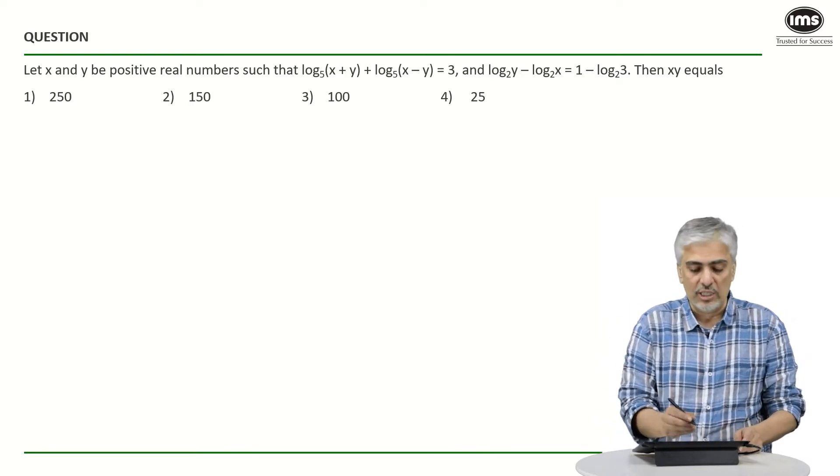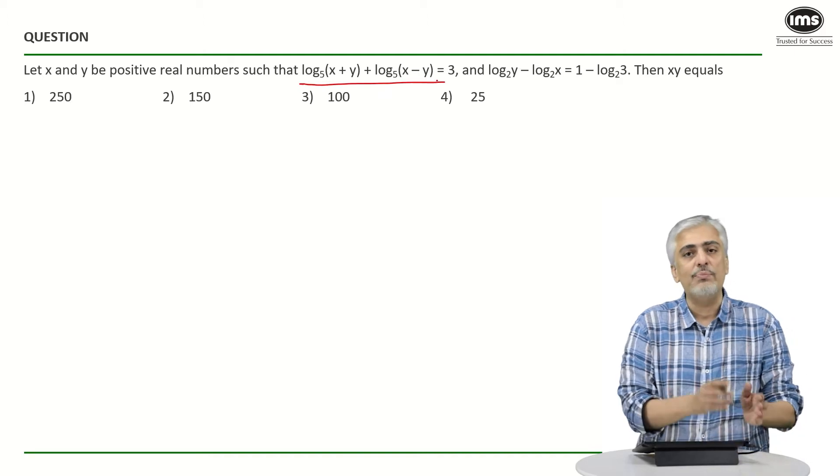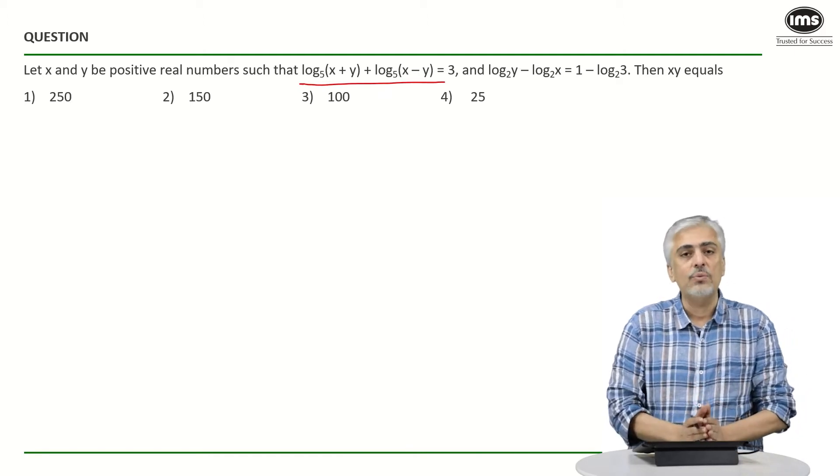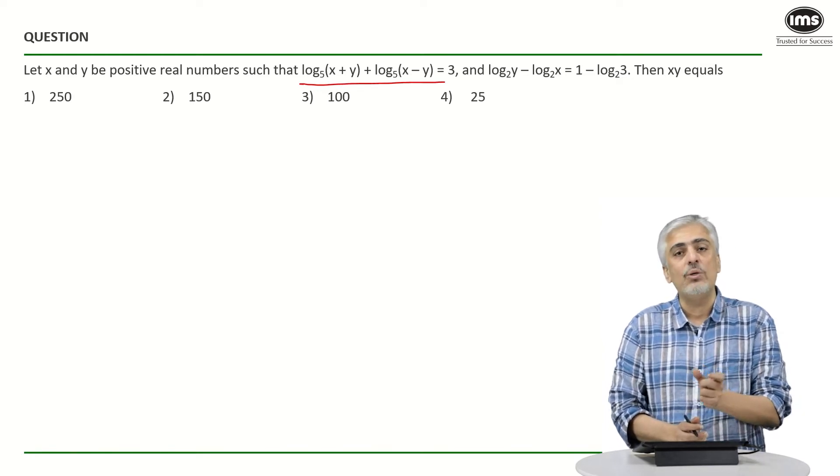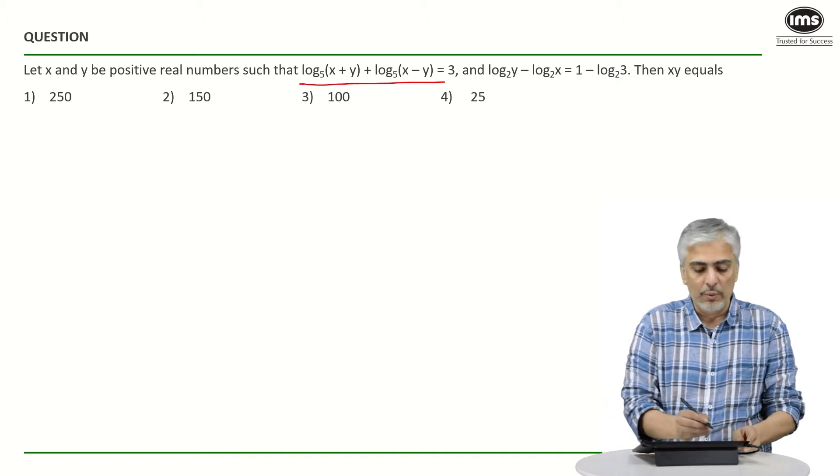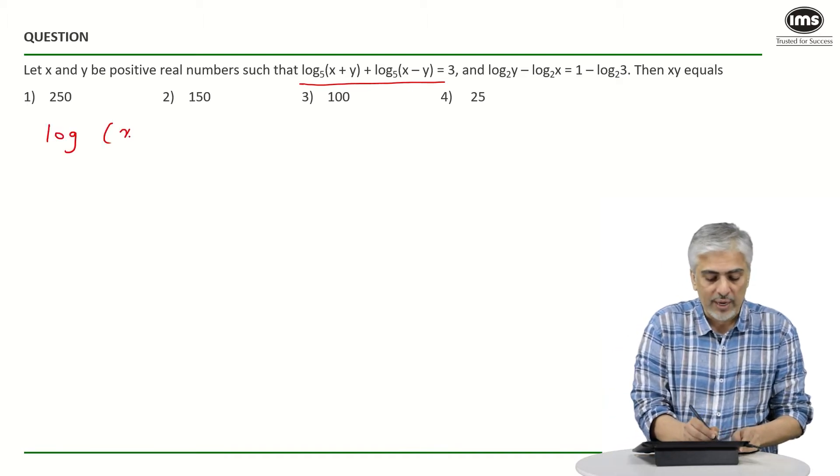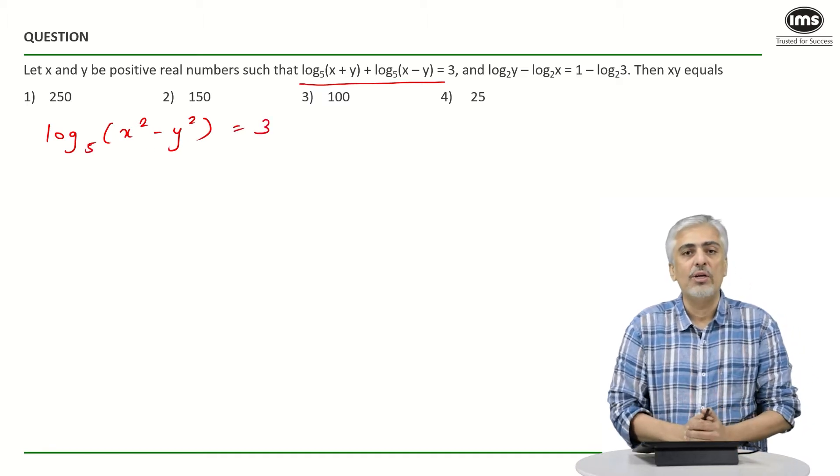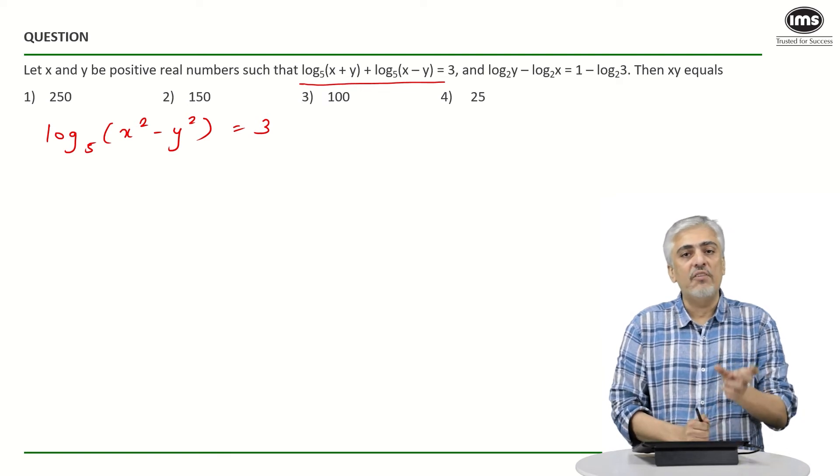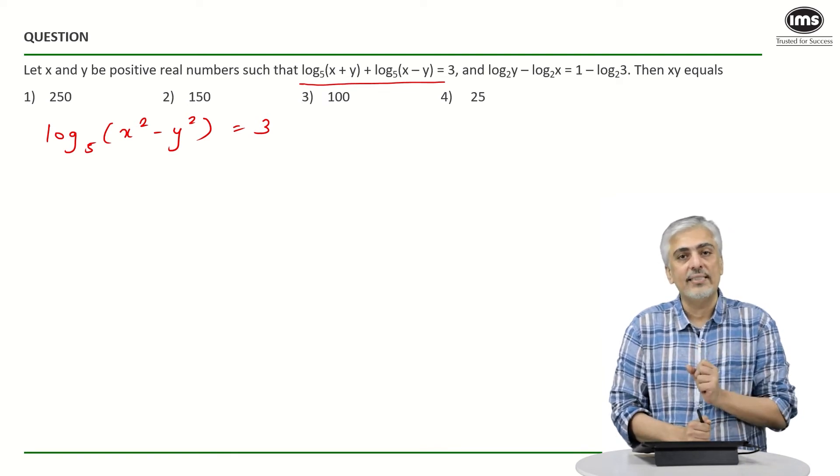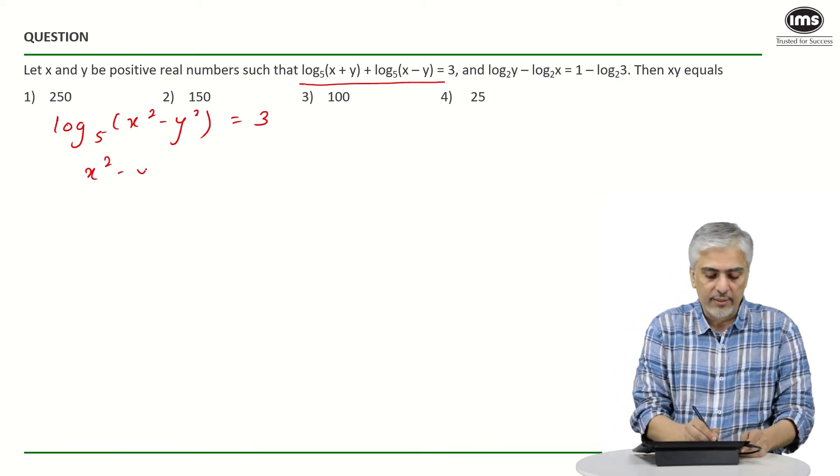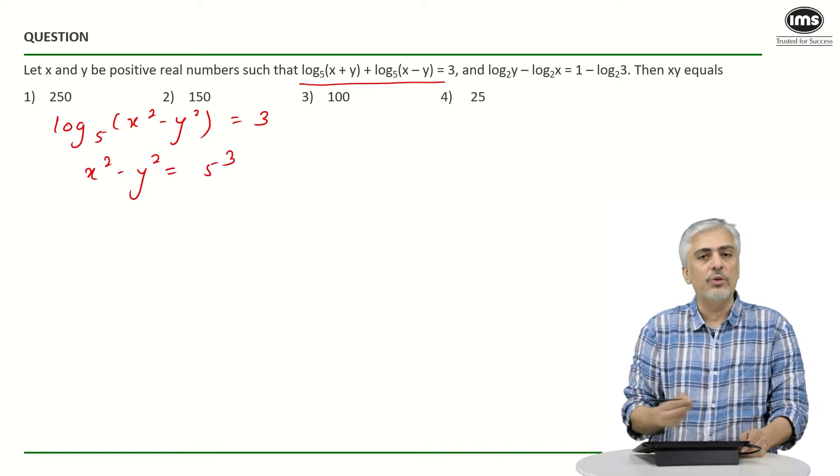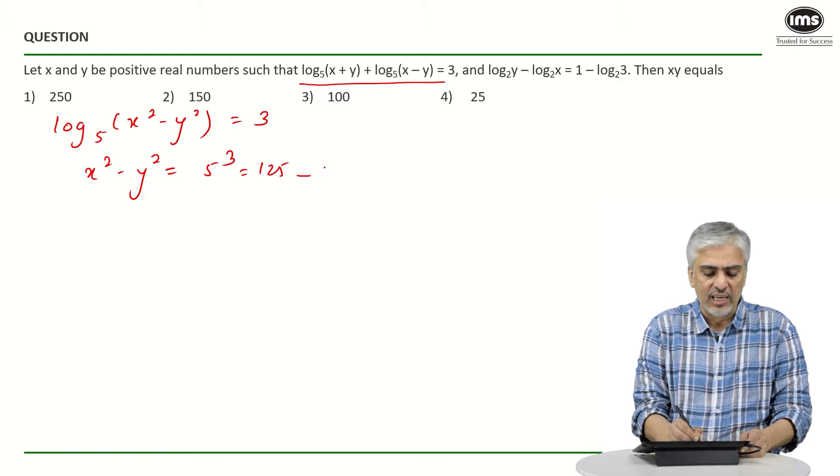So for this question, if I look at the first equation, it's been told to us that log(x+y) with base 5 plus log(x-y) with base 5 is equal to 3. So using the property log a plus log b is equal to log ab, we will get log(x²-y²) to the base 5 is 3. Right? I hope you already got that.